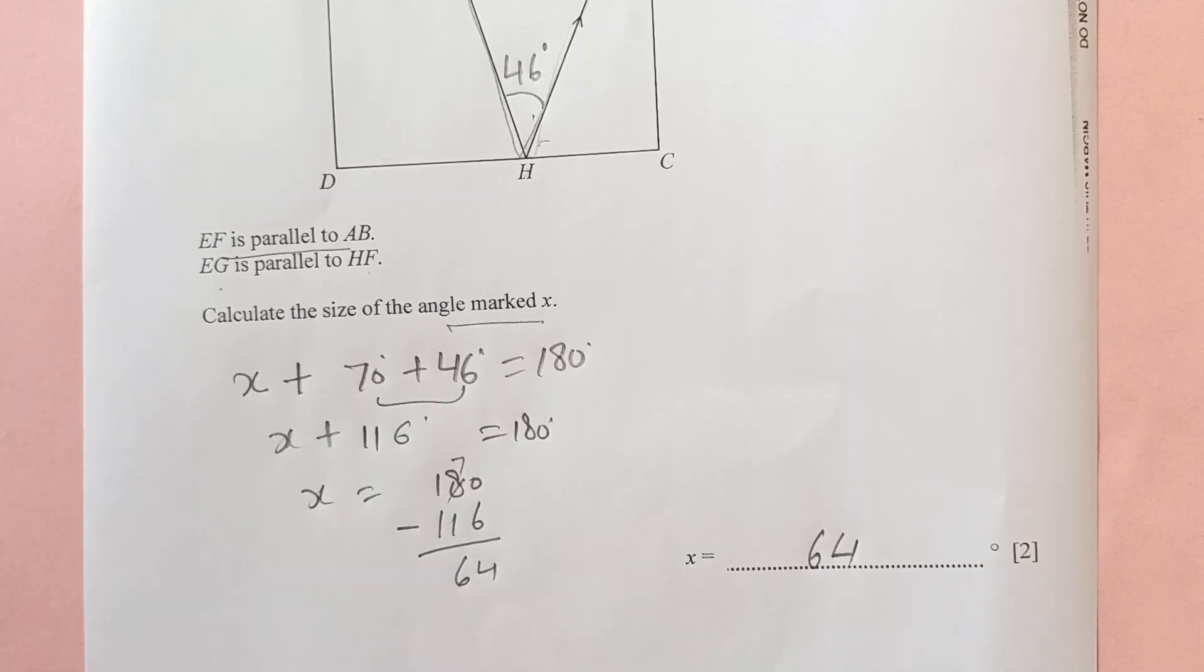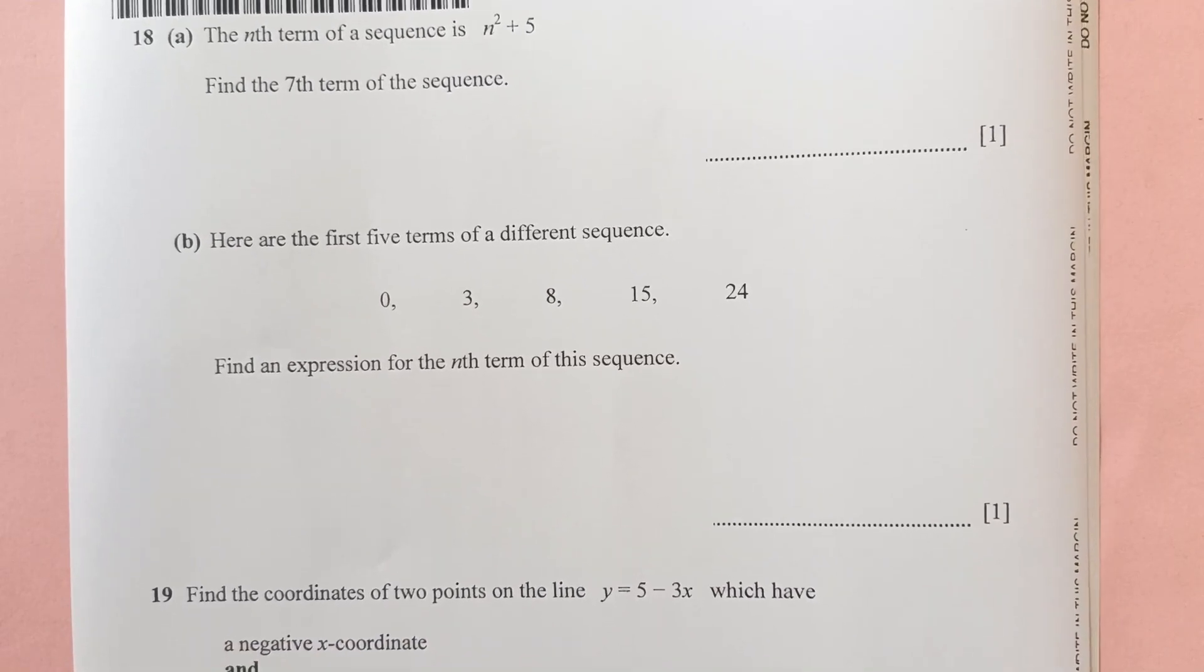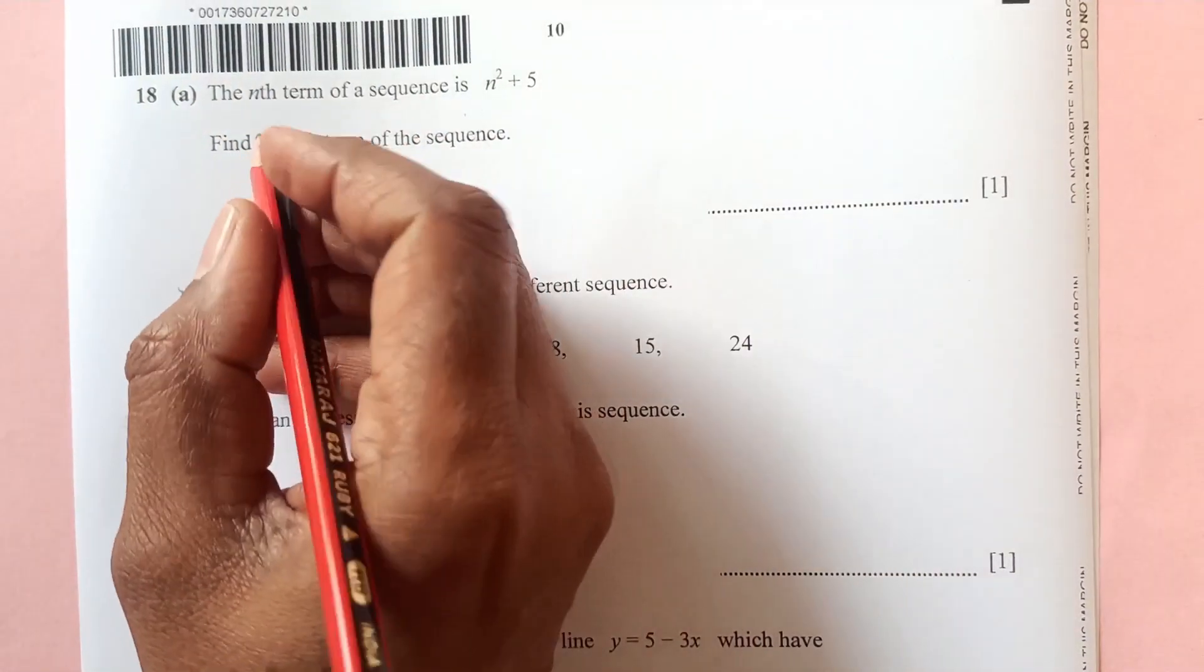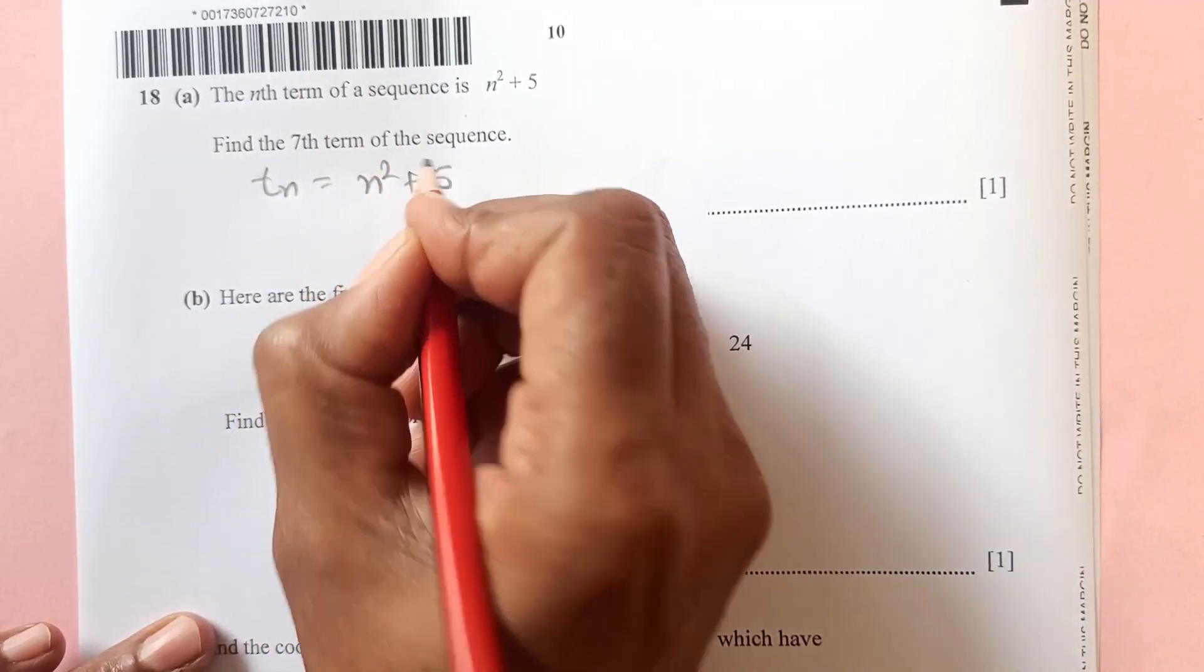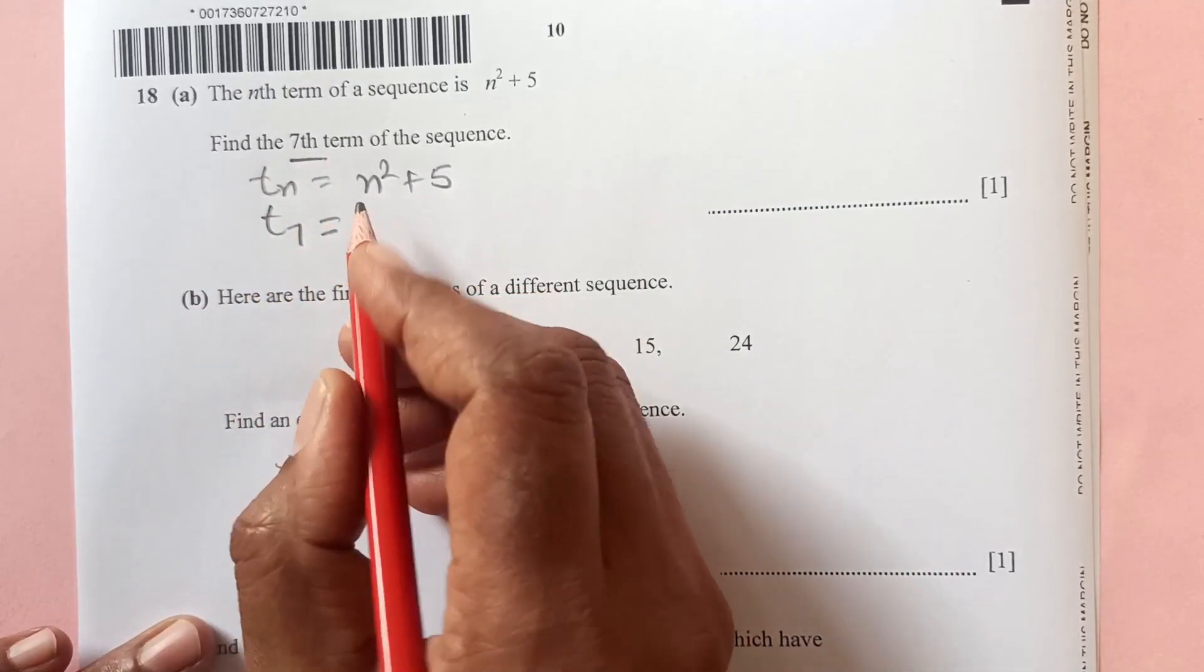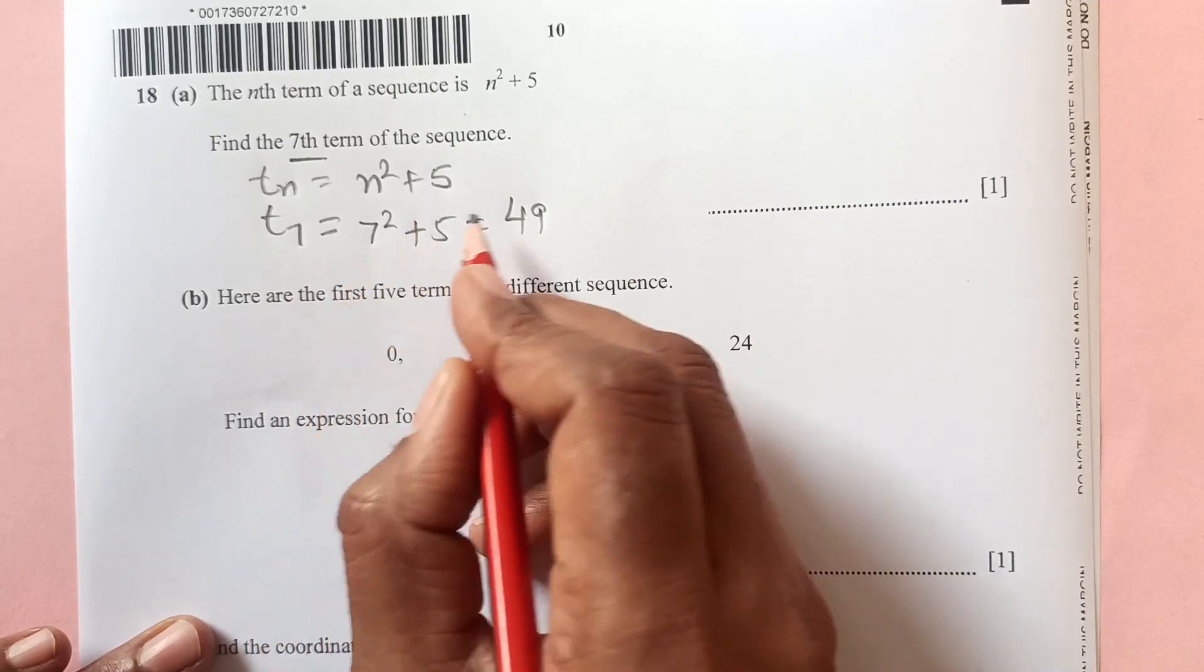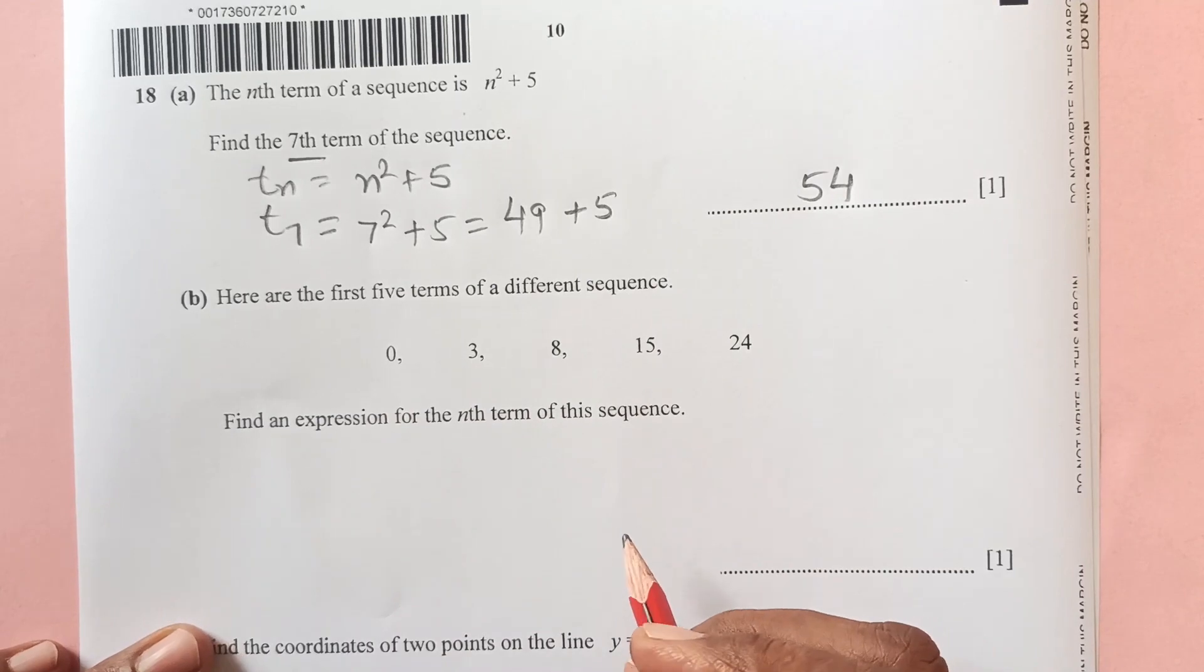Now another question here, we have this one, number 18. Find the 7th term of the sequence n squared plus 5. So this is t_n, that is the nth term: n squared plus 5. We are looking for the 7th term, so t_7. Just replace n by 7, so 7 times 7 is 49 plus 5, which is 54. So the 7th term is 54, right.